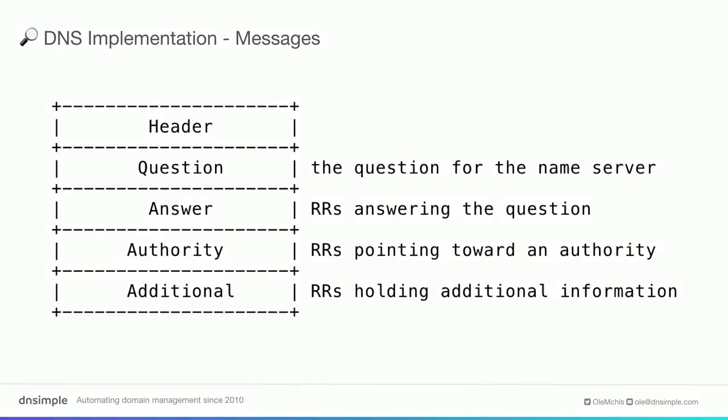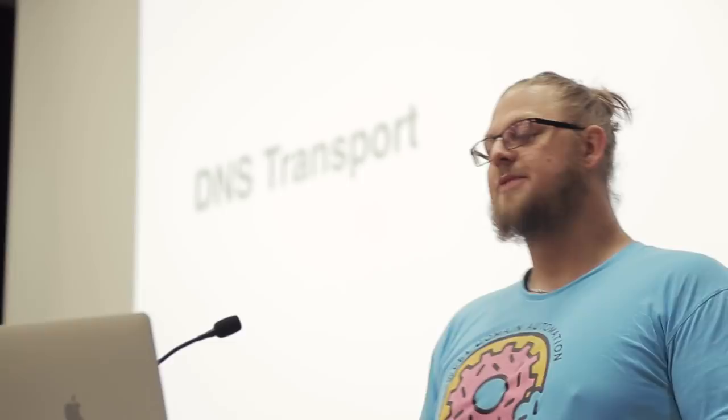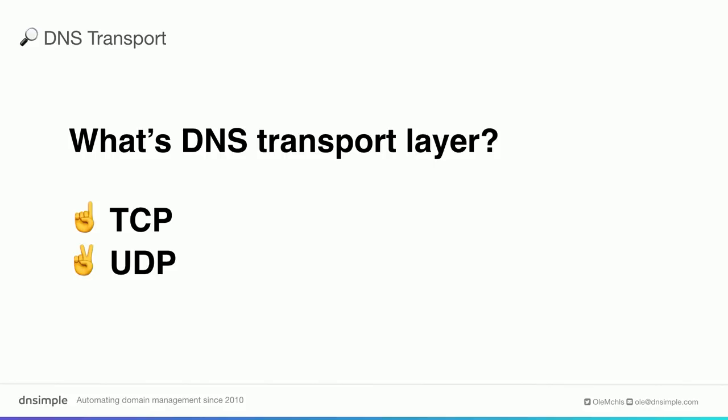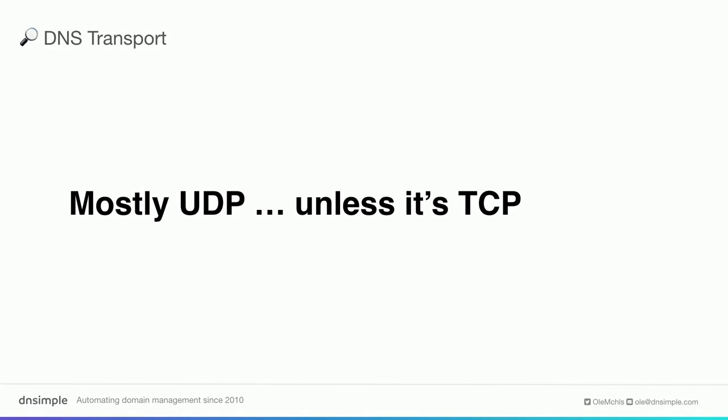So this is just one resource record, and DNS is a protocol that works with message exchanges. There's the question section for the stuff we want to resolve, then there's the answers, authority, and a few other details. And last but not least, part of what DNS really is, is the DNS transport. What's the transfer layer of DNS? Is it TCP? Is it UDP? It's UDP — mostly UDP, unless it's TCP, because obviously it's not that easy. UDP is not acceptable for zone transfers, but it's the recommended method for standard queries on the internet. So most DNS queries your computer does will be in UDP.